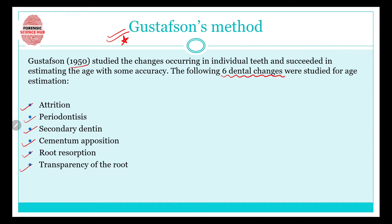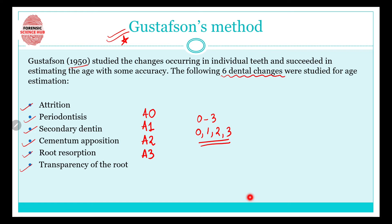The six dental changes studied in Gustafson's method are: attrition, periodontosis, secondary dentine deposition, cementum deposition, root absorption, and transparency of root. These six criteria were ranked from 0 to 3. For example, for attrition: A0 means no attrition, A1 means attrition in the enamel, A2 means attrition in the dentine, and A3 means attrition has reached the pulp. You can check that video for the full explanation.